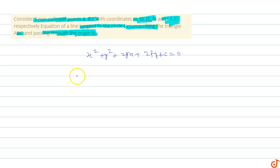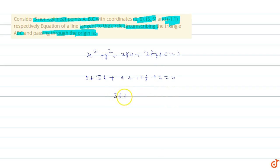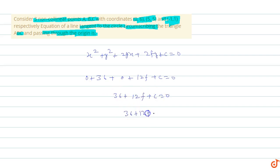Substituting point A(0,6): 0 + 36 + 0 + 12f + c = 0, which gives us 36 + 12f + c = 0, so 36 + 12f = -c. This is equation one. The circle also passes through point B with coordinates (5,5).